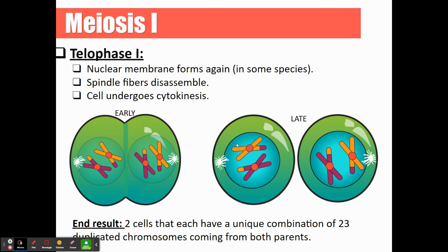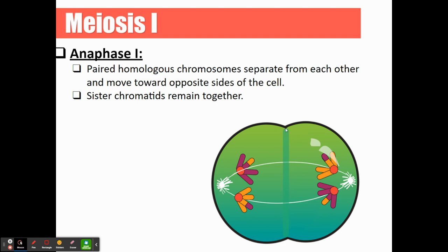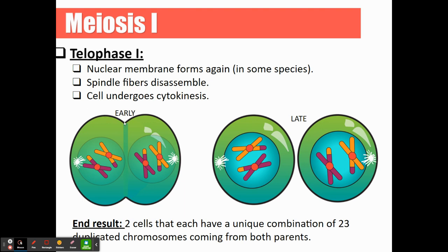In telophase one, the nuclear membrane starts to reappear — in humans, we would definitely see the nuclear membrane reappear. The spindle fibers are going to disassemble, and then the cell is going to undergo cytokinesis. In anaphase one, the cytoplasm starts to pinch in — this is referred to as a cleavage furrow, which we talked about in our mitosis lesson. That cleavage furrow deepens in the early stages of telophase one and continues until we have two daughter cells. The end result of meiosis one is two daughter cells with a unique combination of 23 duplicated chromosomes from both parents.